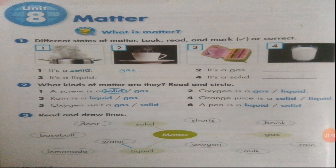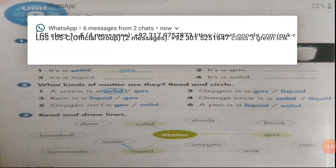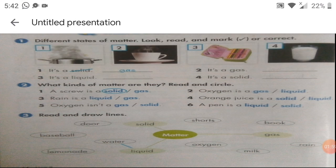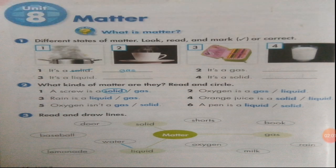Look at the first picture — the first statement says it's a solid. No, it is a gas. Second one: look at the second picture, the statement says it's a gas — if it is correct write correct on the blank, if not write the correct state. Third one: it's a liquid — write the answer accordingly. Fourth one is a glass of milk — if it is solid write correct, otherwise write the correct state of matter.